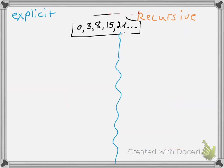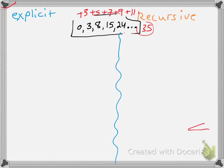You need to recognize explicit and recursive formulas and know how to evaluate them. Now, the harder part is writing them. Here's another sequence: 0, 3, 8, 15, 24. Go ahead and pause to find the pattern. The pattern is going up by consecutive odd integers — plus 3, plus 5, plus 7, plus 9. So the next term is probably 24 plus 11, which is 35.